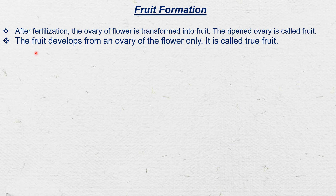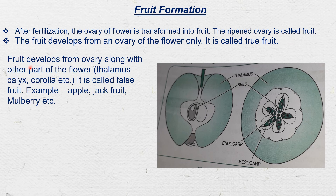When the fruit develops from the ovary of the flower only, it is called a true fruit — for example, mango. But when fruit develops from the ovary along with other parts of the flower such as thalamus, calyx, corolla, etc., it is called a false fruit.